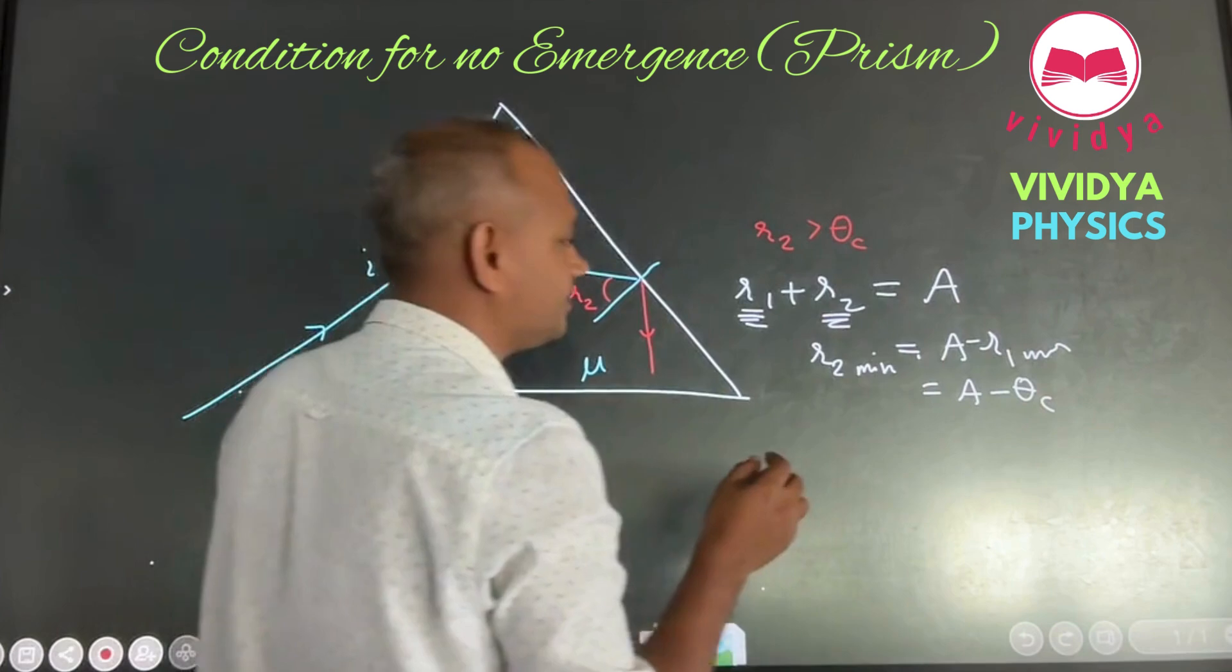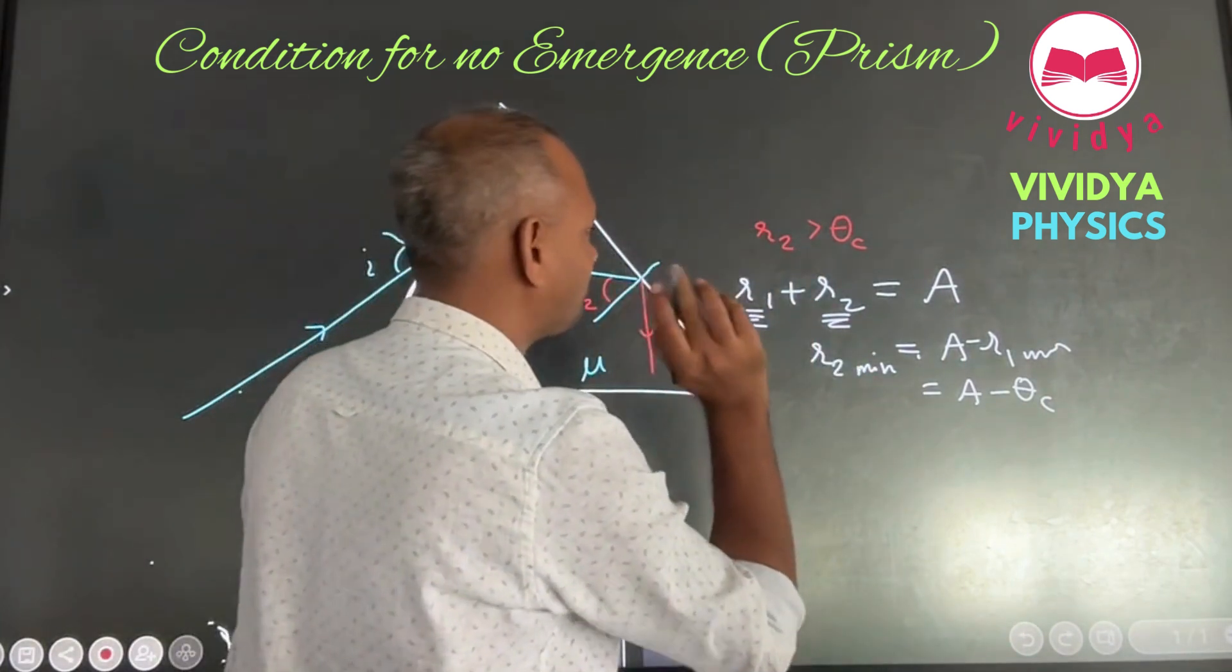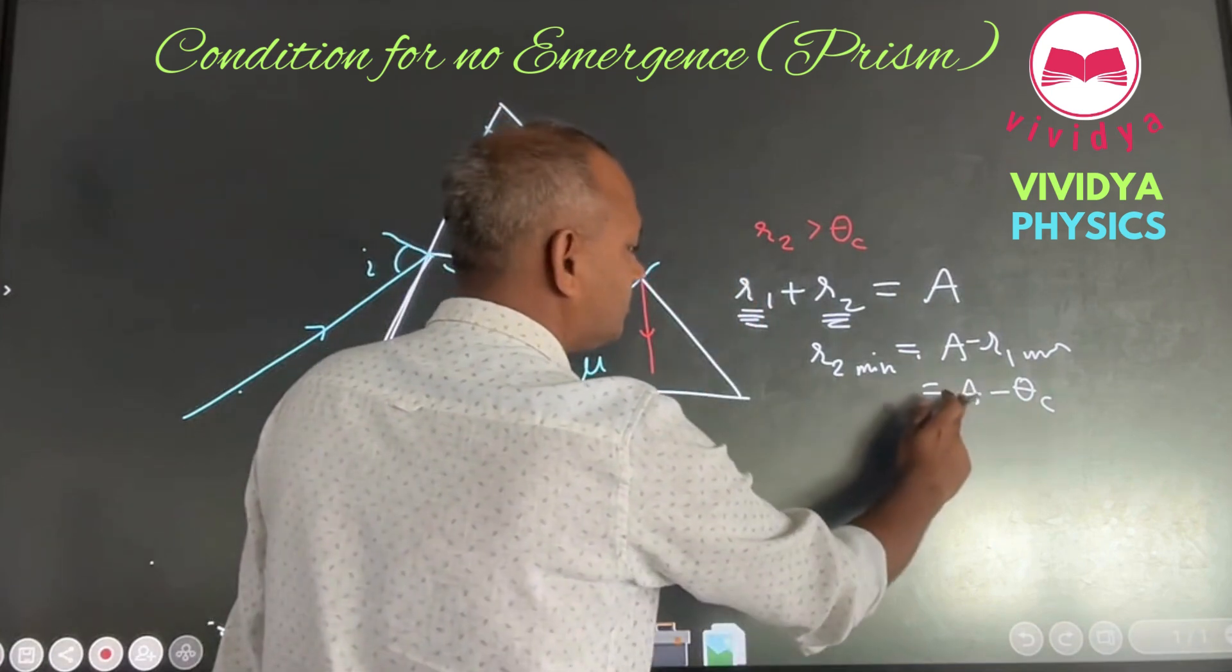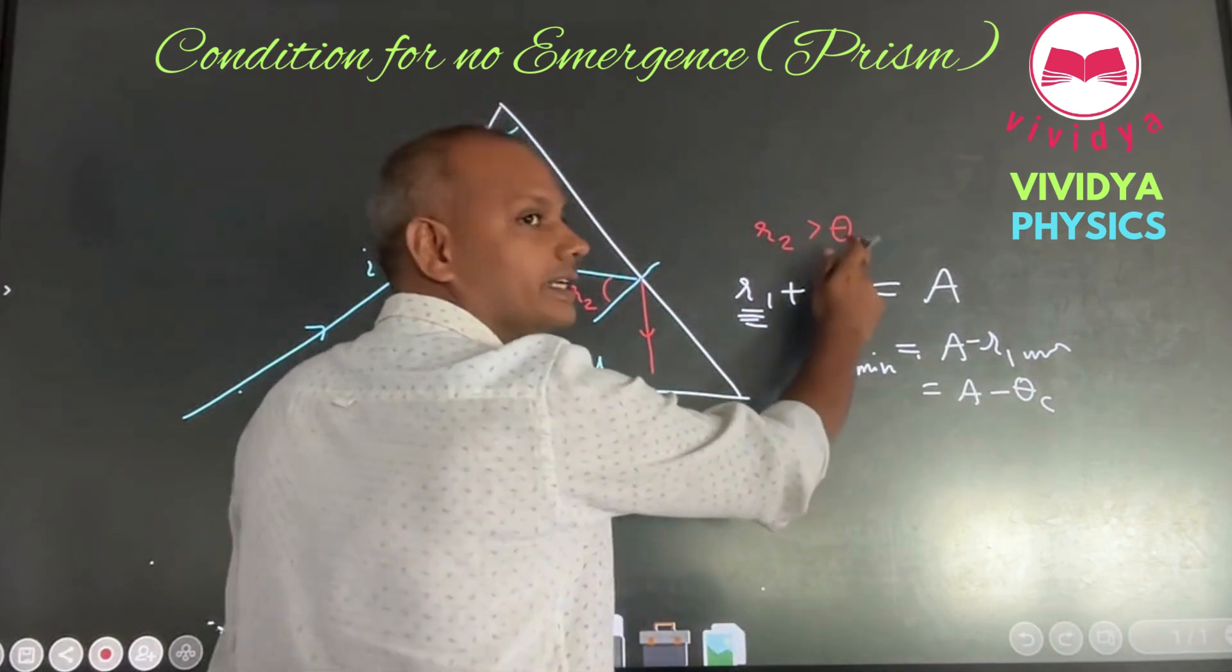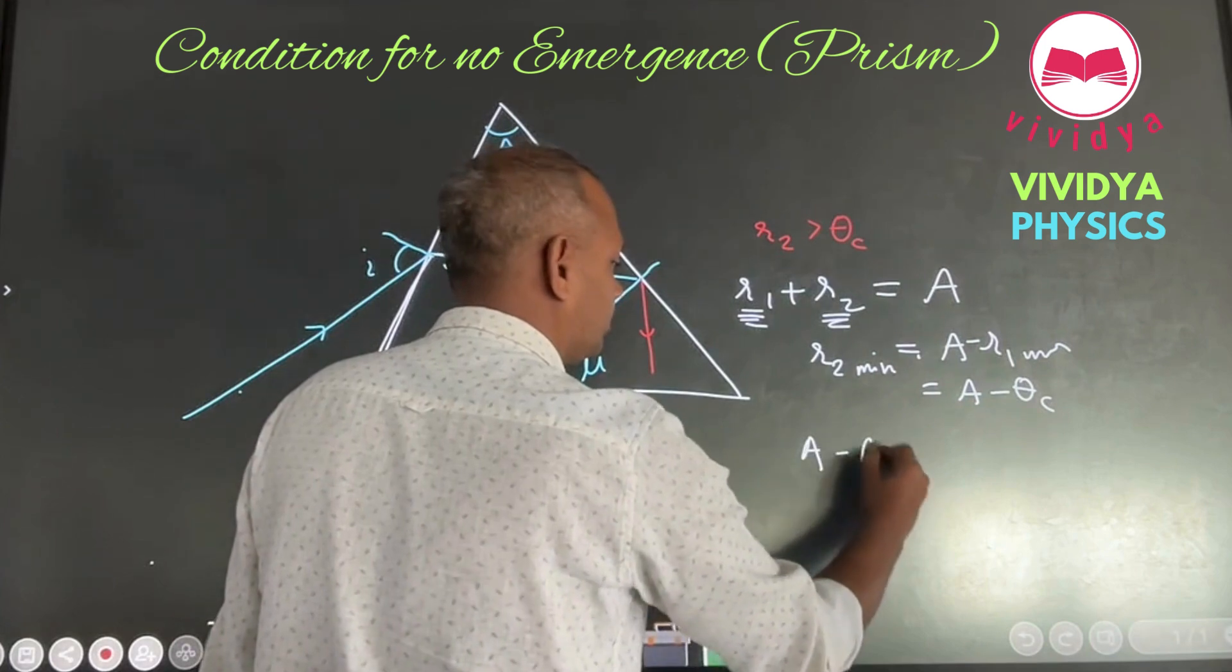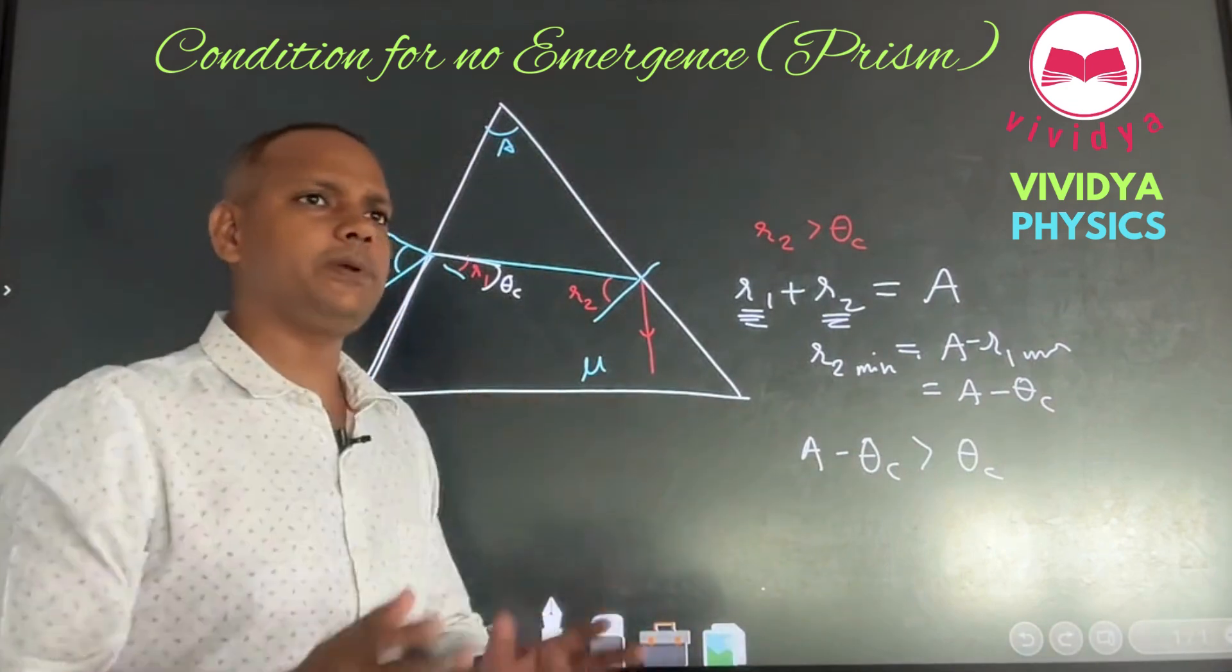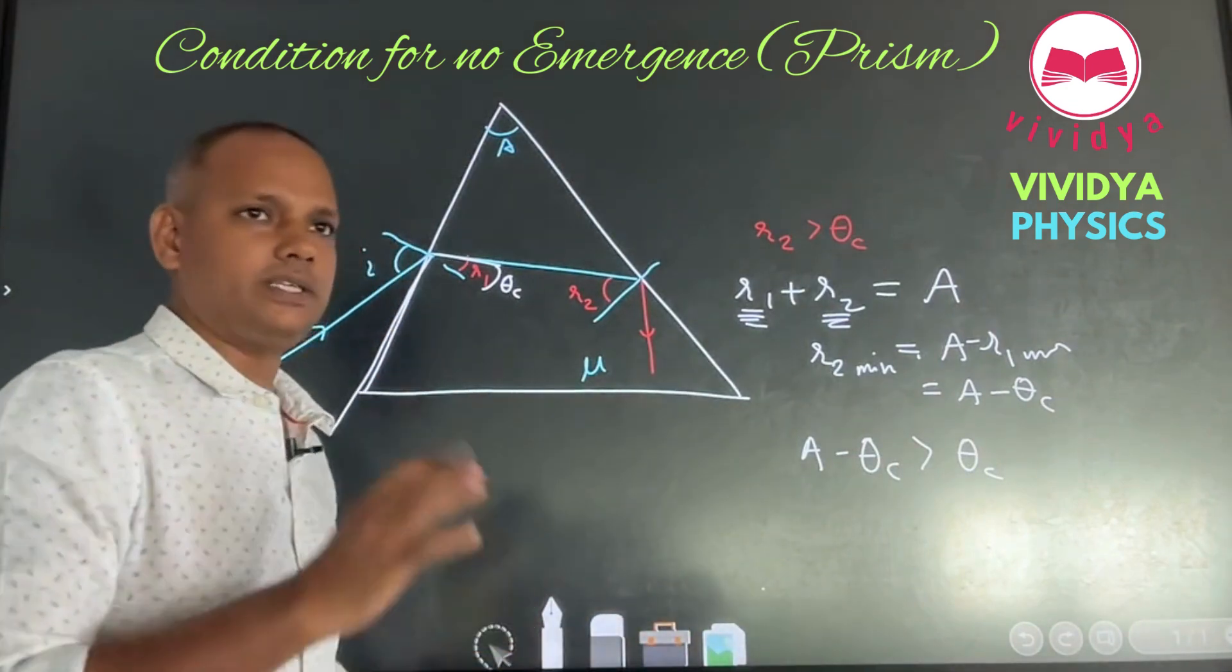What you are saying is, this is R2's minimum value. Then what you will write? What is R2? Even minimum value is greater than theta C will do. We are saying R2 is how much? A minus theta C. The minimum value should be greater than theta C. That guarantees that all other values will be definitely greater than theta C.